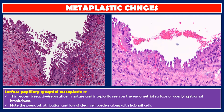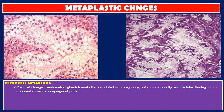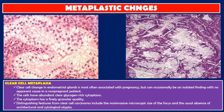Clear cell metaplasia: clear cell change in endometrial glands is most often associated with pregnancy but can occasionally be an isolated finding with no apparent cause in a non-pregnant patient. The cells have abundant clear glycogen-rich cytoplasm with a finely granular quality. Distinguishing features from clear cell carcinoma include the non-invasive microscopic size of the focus and the usual absence of architectural and cytological atypia.